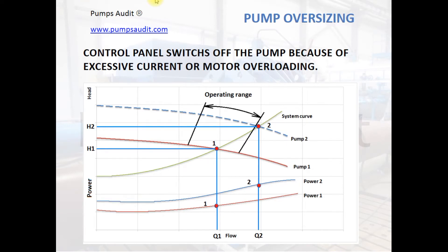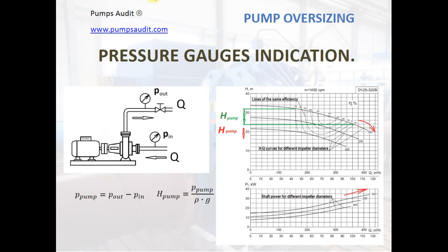Very often the pump user cannot understand what happens, and thinks the pump or electric motor is defective. By using pressure gauges, the pump user can define the position of the operating point relative to the operating range. This is another way to determine if the pump is oversized. If the pump is oversized, it will have a head less than the head within the operating range. Try closing the discharge valve and see what happens — how will pressure, current, vibration, and noise change?